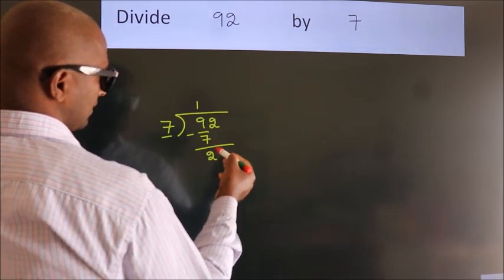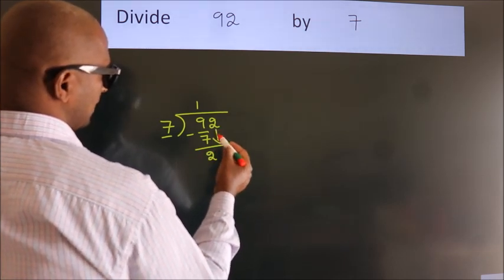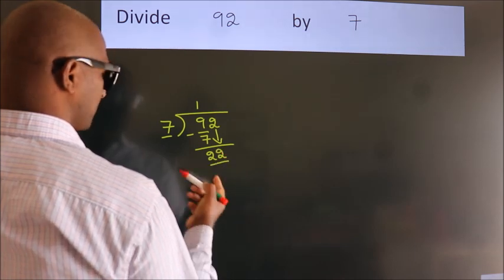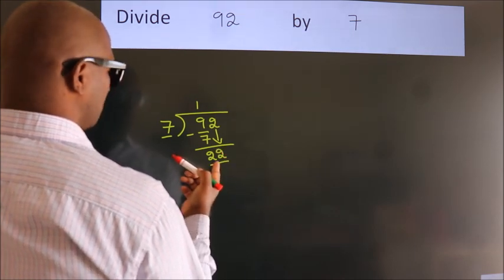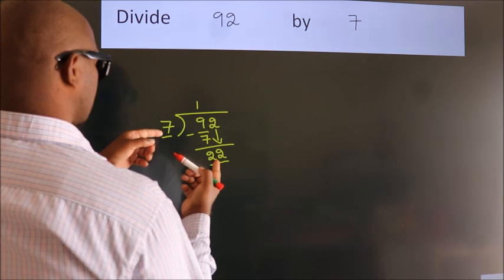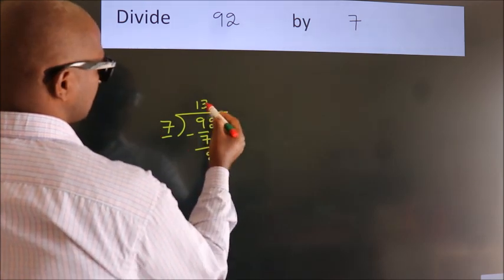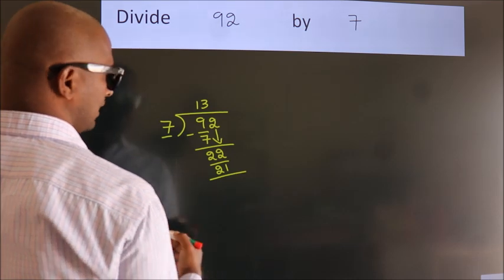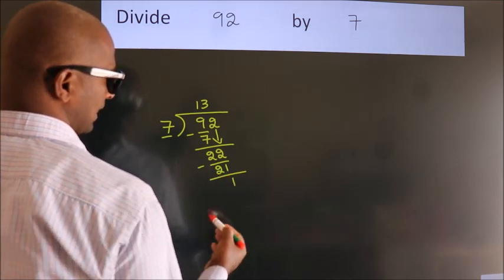After this, bring down the beside number, so 2 down. So 22. A number close to 22 in the 7 table is 7 threes, 21. Now we subtract. We get 1.